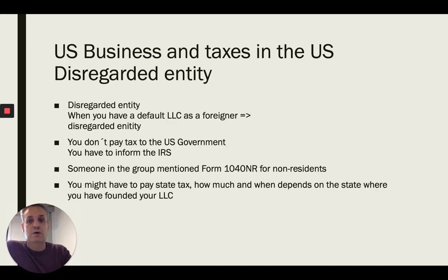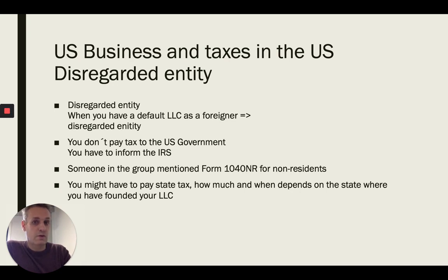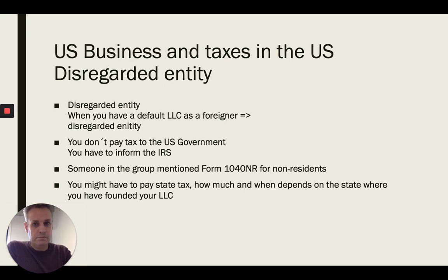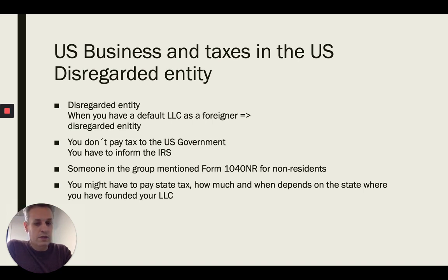US businesses and taxes in the US regarding a disregarded entity. Like I told you in the previous video, a disregarded entity is not a solid solution to have a legal ACX account, so you should elect your LLC to be taxed as a C-Corp to become totally legit. But I know a lot of you have a disregarded entity — an LLC with a disregarded entity — so you have an EIN number.